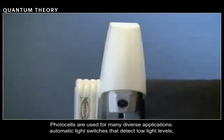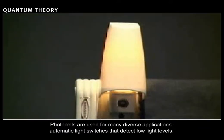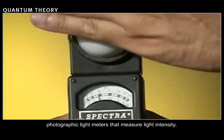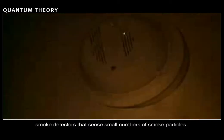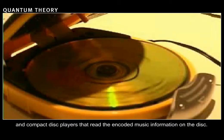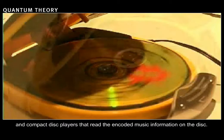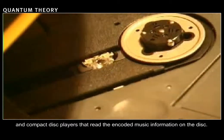Photocells are used for many diverse applications: automatic light switches that detect low light levels, photographic light meters that measure light intensity, smoke detectors that sense small numbers of smoke particles, and compact disc players that read the encoded music information on the disc.